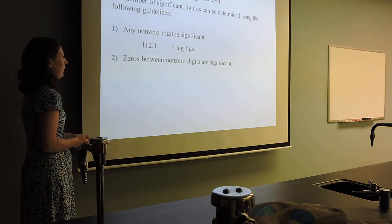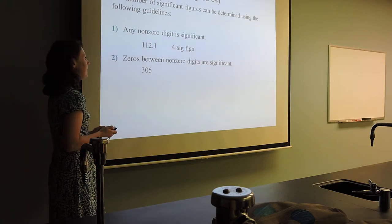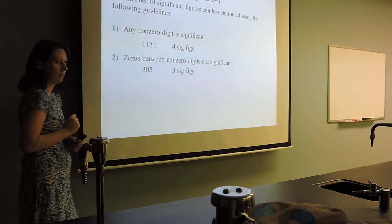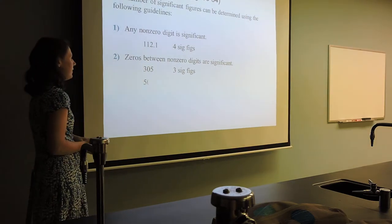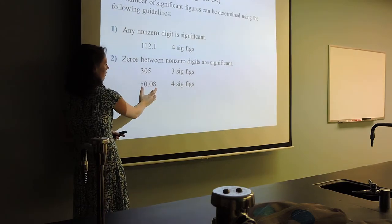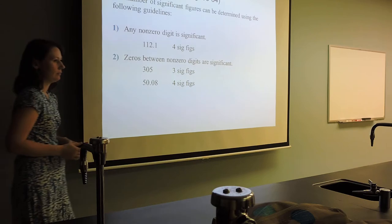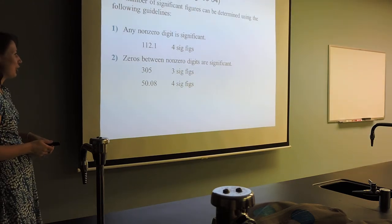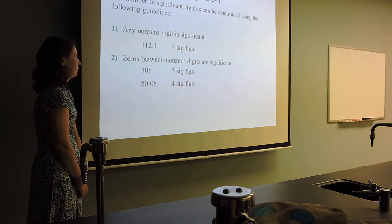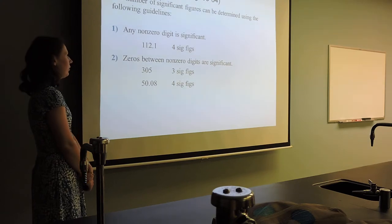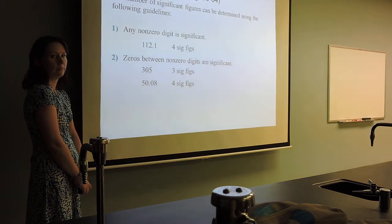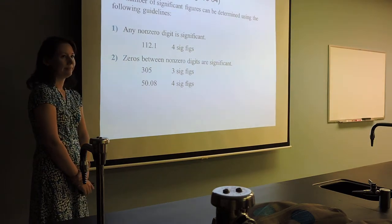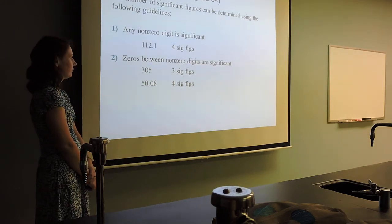A zero that's sandwiched in between non-zero digits is significant. These are non-zero digits with a zero stuck in the middle — this number has three sig figs because this zero is sandwiched in between non-zero digits. Same is true with this one: these zeros are sandwiched in between non-zero digits, so therefore this measurement has four sig figs. The first two rules are pretty easy.